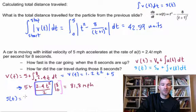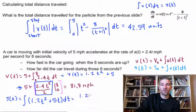Well, position is just going to be the integral of the velocity, which is going to be 1.2t squared plus 5t dt, which is going to end up being 1.2t cubed over three plus,